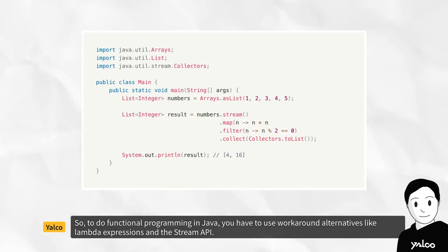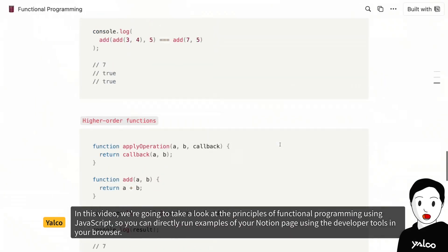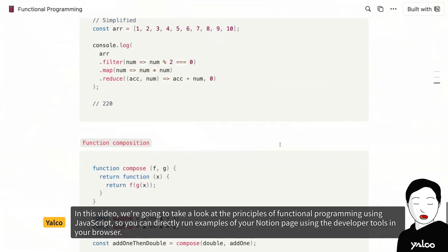Java methods can't exist on their own. So, to do functional programming in Java, you have to use workaround alternatives like Lambda expressions and the Stream API. We'll delve deeper into this after we cover the topic of object-oriented programming. In this video, we're going to take a look at the principles of functional programming using JavaScript, so you can directly run examples on your Notion page using the developer tools in your browser.